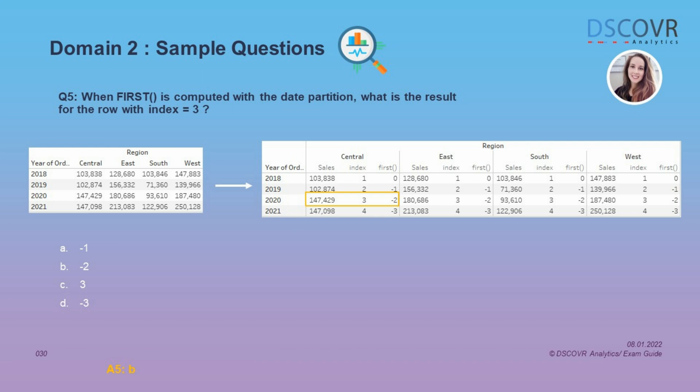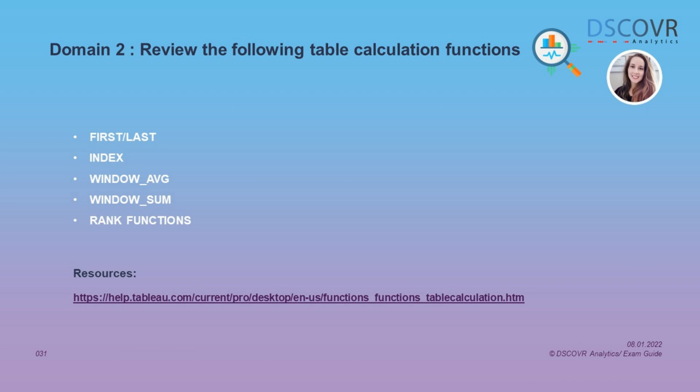Here we have the FIRST function, which many of you have probably never heard of. This function assigns a value to each record starting at the very top — similar to the INDEX function, which assigns a value based on the positioning of the record. However, instead of assigning 1 to the first record, FIRST assigns 0, and the value returned afterwards represents the offset from the first row. When FIRST is computed with the date partition, the row with index number 3 gets a computed value of negative 2 — representing the offset from the first record. Make sure you review all the table calculation functions listed.